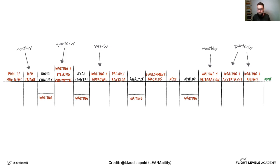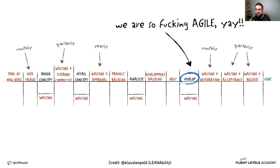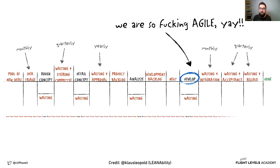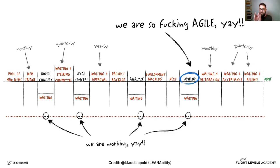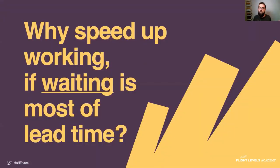The challenge is that we're focusing on trying to make one tiny piece of the problem faster — we're trying to make the working faster. But if you look at it, the red areas are where we're waiting and the black dots are where we're actually working. So my question is: why would we want to speed up the working if waiting is most of the lead time? It doesn't necessarily make a lot of sense.